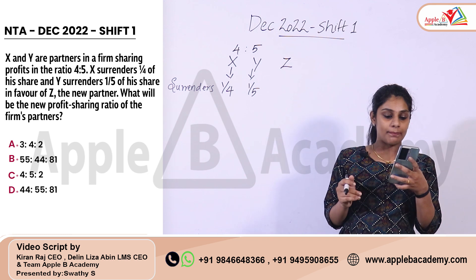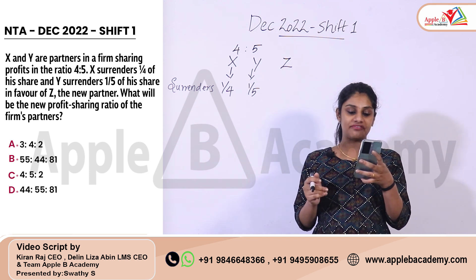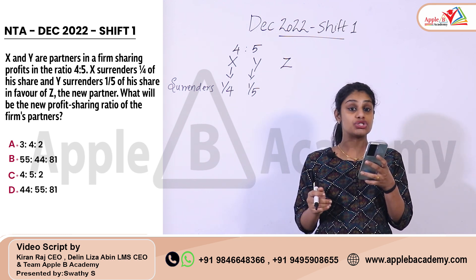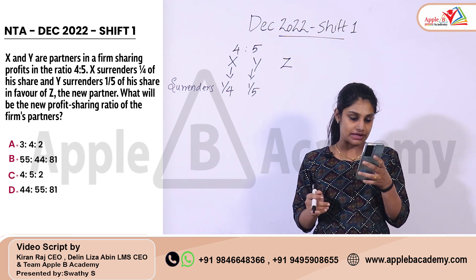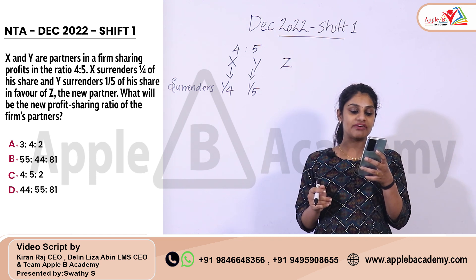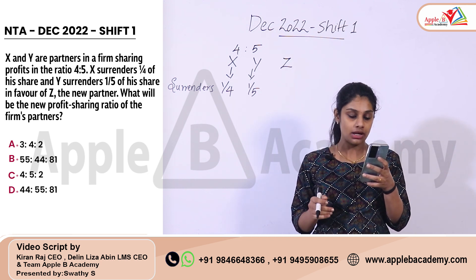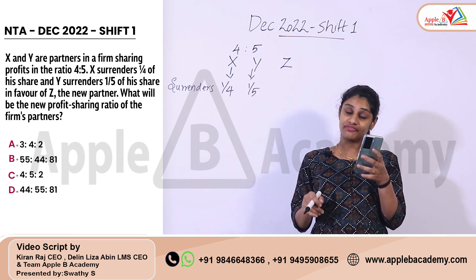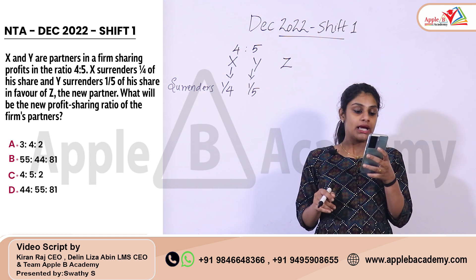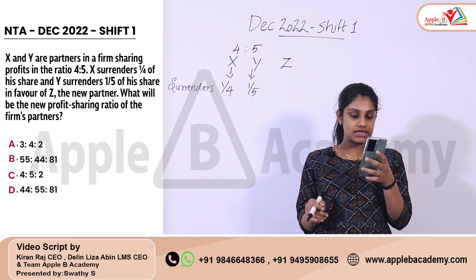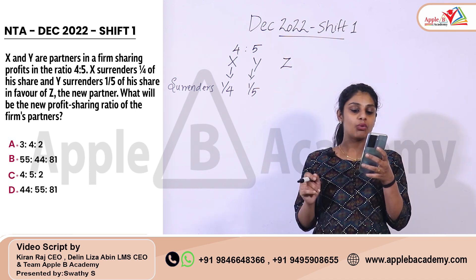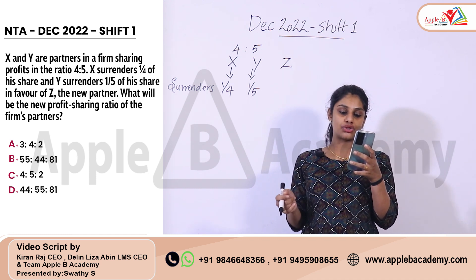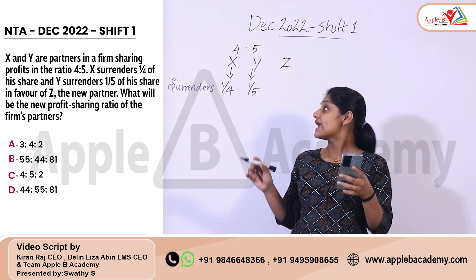The question is: X and Y are partners in a firm sharing profits in the ratio of 4 to 5. X surrenders 1/4th of his share and Y surrenders 1/5th of his share in favour of Z, the new partner. What will be the new profit sharing ratio of the firm's partners?